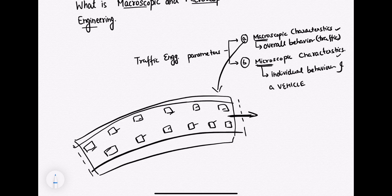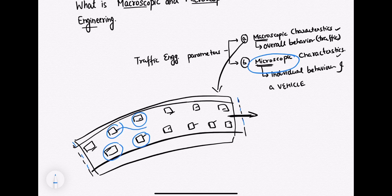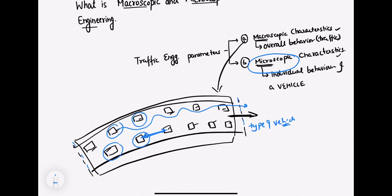While if you are studying the behavior of an individual vehicle in the same road section, then this comes under microscopic. In microscopic, you are interested in the movement pattern of the vehicle — how it is moving in traffic, what distance is maintained between vehicles, and what type of vehicles are majorly found in that road section.